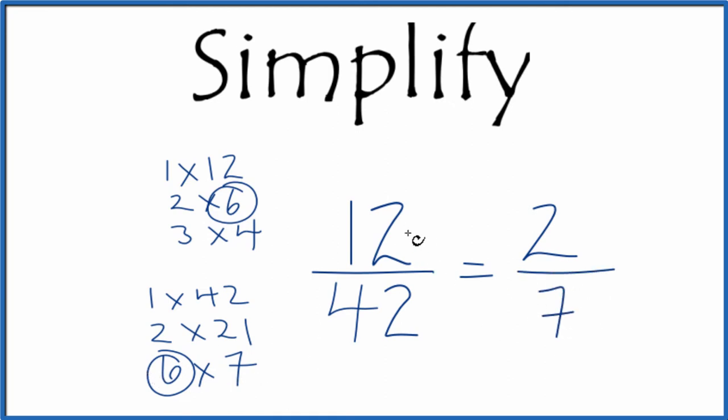We've simplified the fraction 12 over 42 to two sevenths, and we can't reduce this any further. These are equivalent fractions. If you want to use a calculator, divide 12 by 42 or two by seven, you're going to get the same number. We've simplified 12 over 42 down to two over seven.